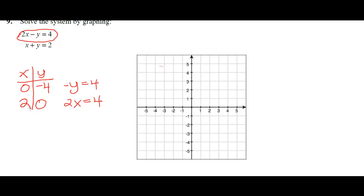So now we have to graph this line. We're going to graph our intercepts. The y-intercept is at (0, negative 4), which is down here, and the x-intercept is at (2, 0), which is over here. We want to connect these with a straight line. That looks about right.